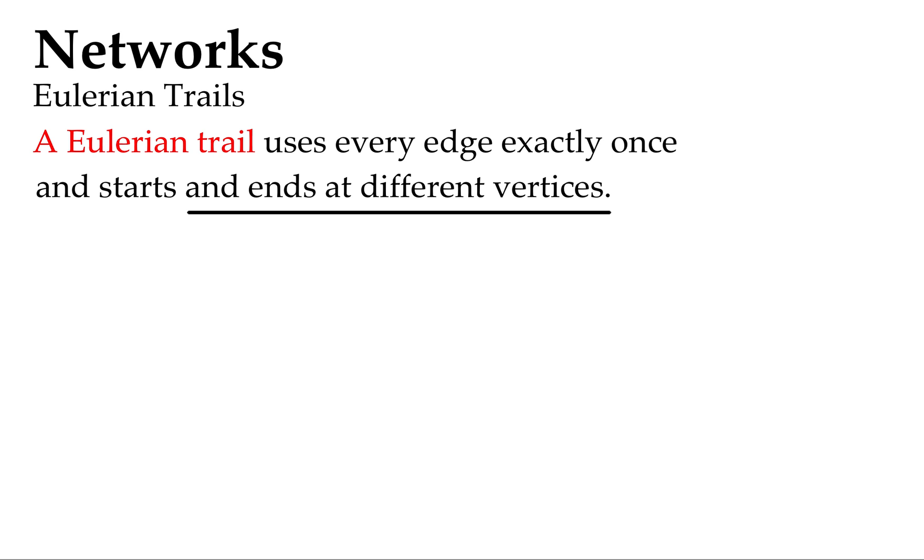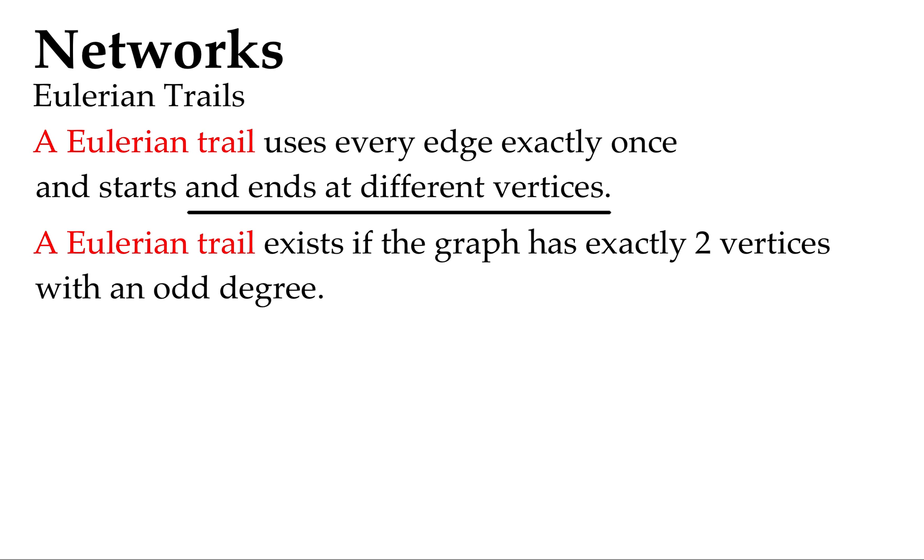It's got to use every edge only once and starts and ends at a different vertex. It's not all shapes that can be Eulerian trails, but let's have a look. And one piece of information is that a Eulerian trail exists if the graph has exactly two vertices with an odd degree. We looked at degrees earlier on in the series. That was video two if you're looking.